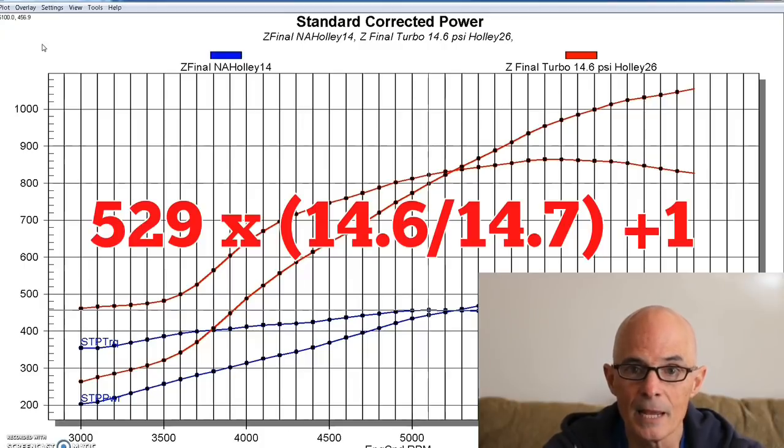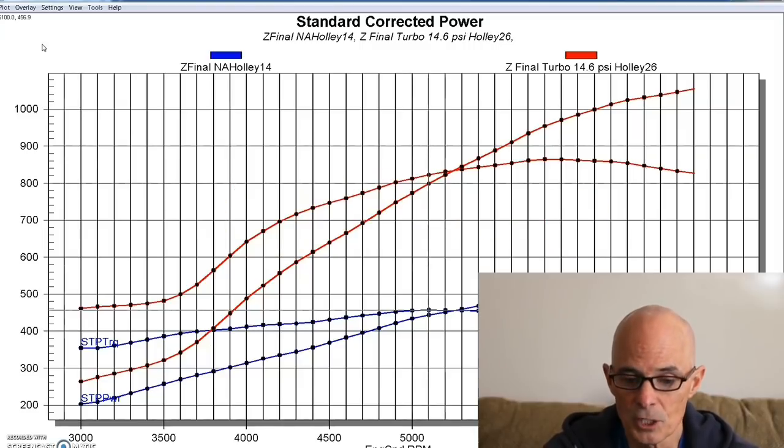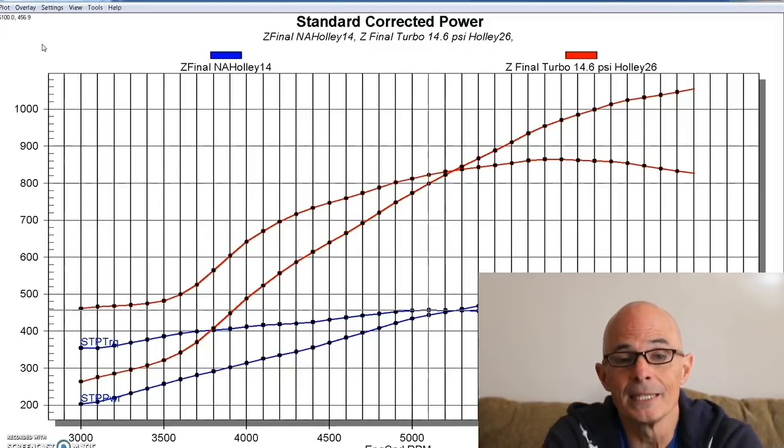And if you do the power boost formula, if you take the NA power output and multiply it by the boost divided by 14.7 plus one, you come out with almost exactly 1050. So this particular example followed the formula perfectly, meaning it did exactly what it should, exactly what we expected it to do.